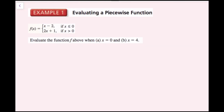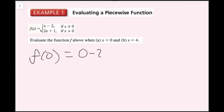For this example, we want to evaluate the function f when x is 0 and when x is 4. We look at the domains: for x equals 0, it doesn't fit into x greater than 0, but it does fit into x less than or equal to 0. So we plug 0 into x minus 2, giving us f(0) equals 0 minus 2, which simplifies to negative 2.